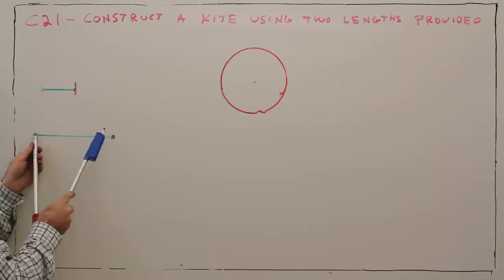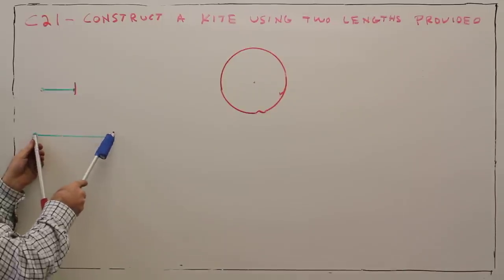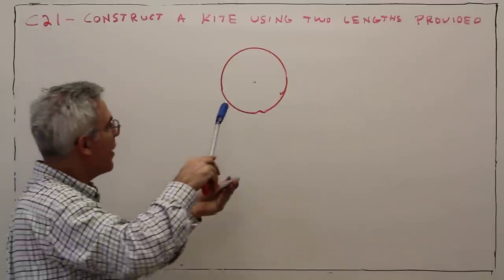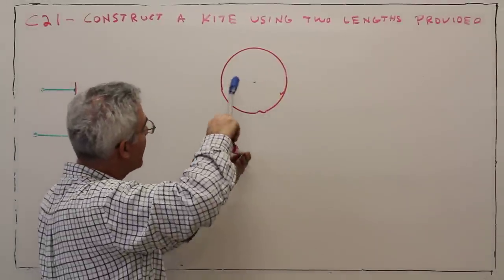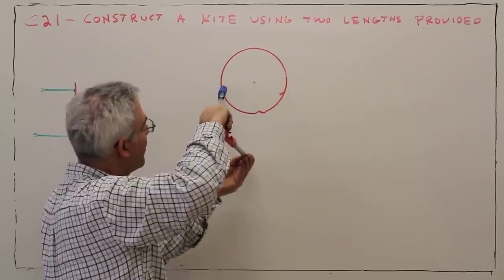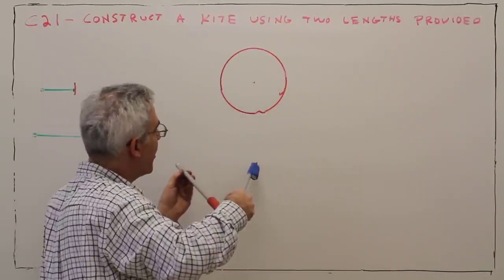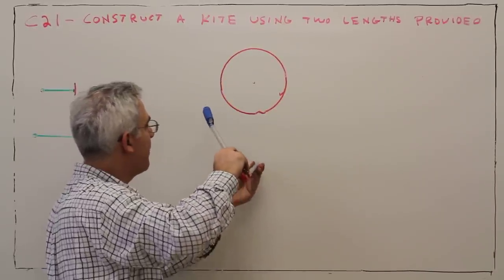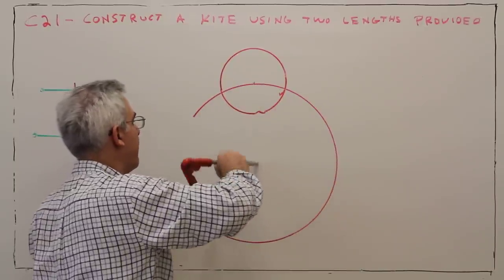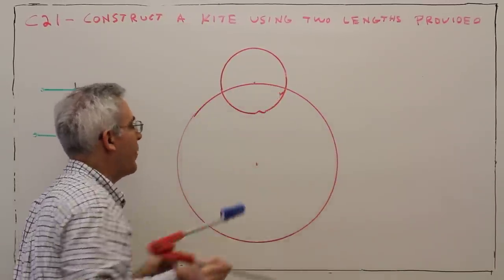Then for the other circle, again you've got to show these arcs. This is called showing your work. And you could decide how you want it to intersect. Okay, so I'll put my center point right there. Ooh, not bad.